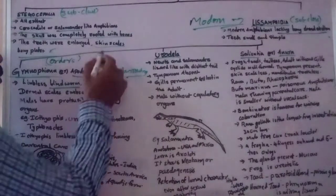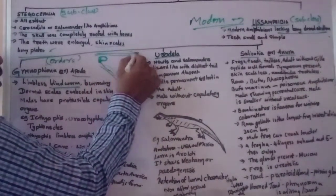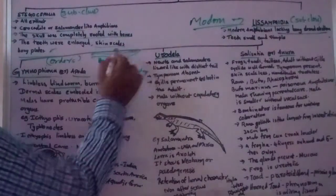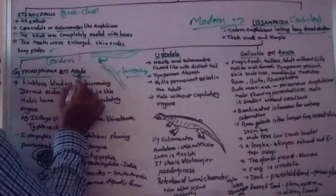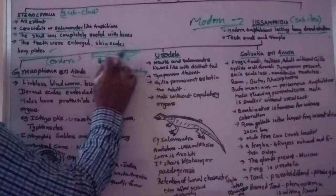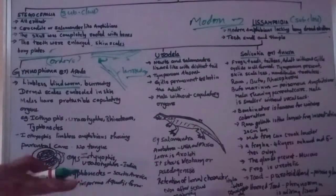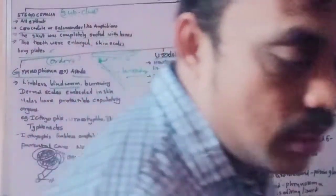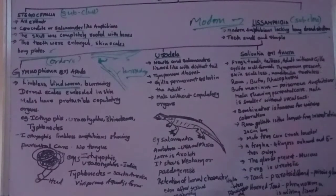Their body is long like worms — like an earthworm or snake-like structure. These are limbless. The meaning of Apoda: 'a' means absent, 'poda' means limbs — so there are no limbs. They live in burrows and are blind worms; their eyes are absent or vestigial and not useful.